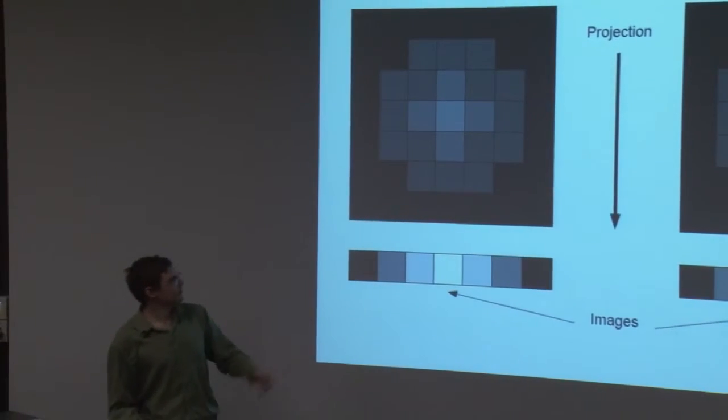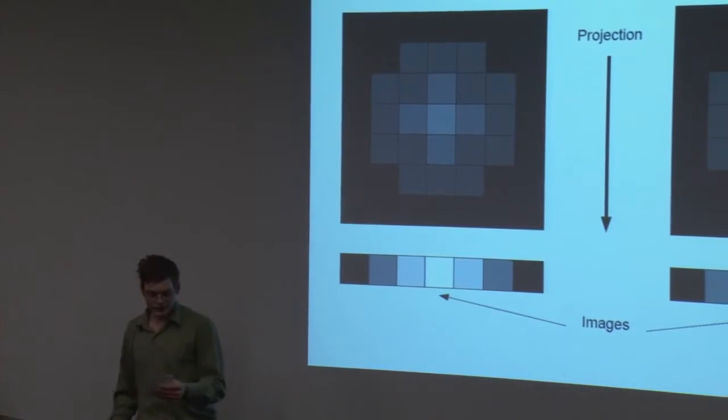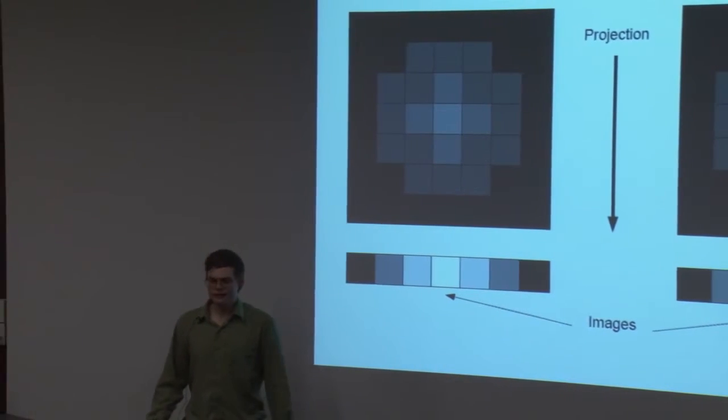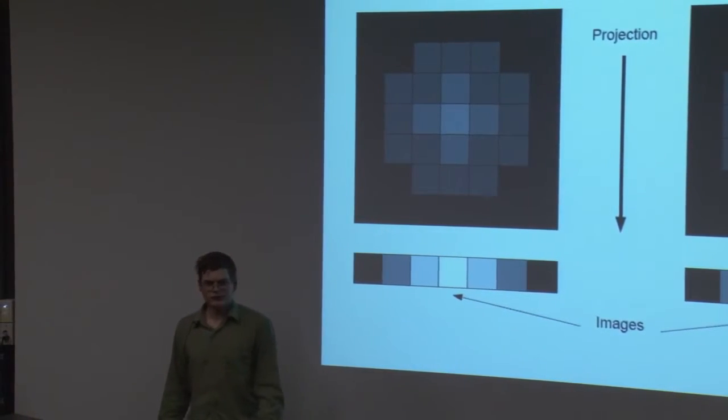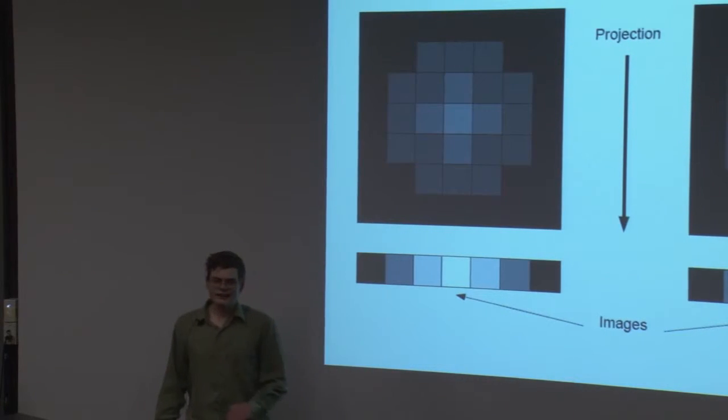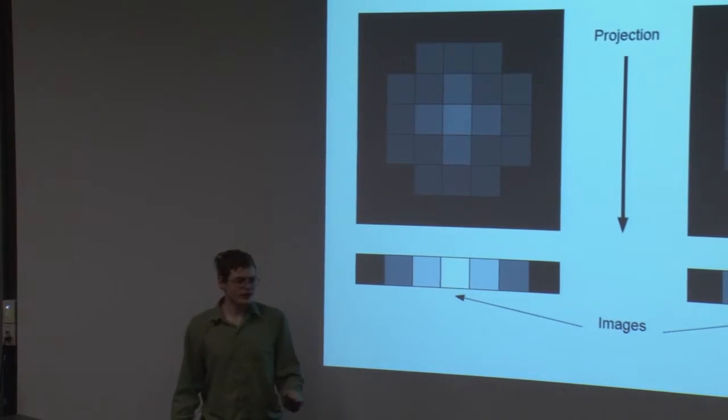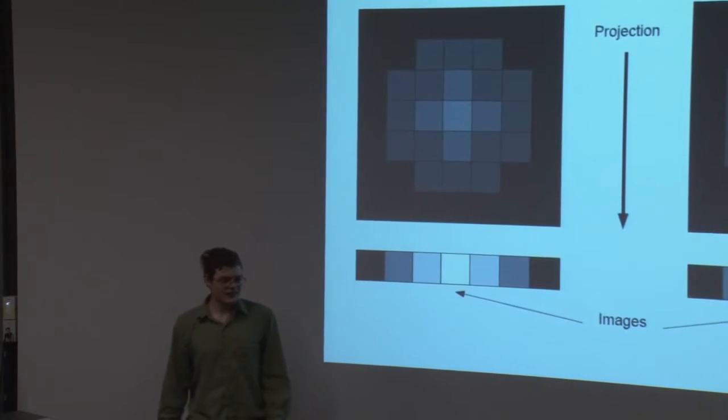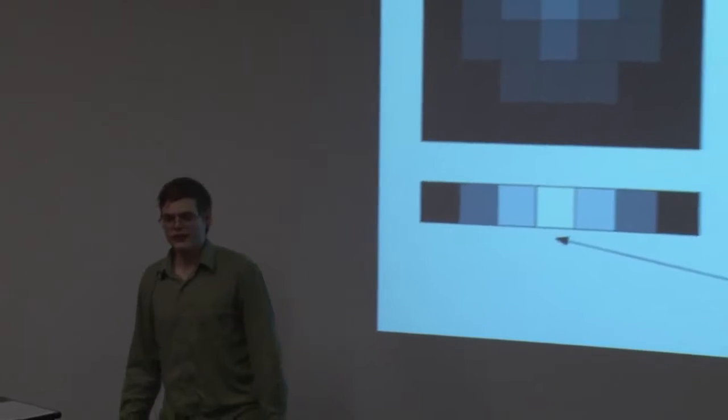This process is called projection, and it's illustrated in these diagrams. Now, dust in the galaxy can block some of the light. This violates the assumption of transparency, and as an approximation, we ignore the dust—sweep it under the rug, so to speak—because it's a reasonable approximation and leads to very elegant mathematical results.